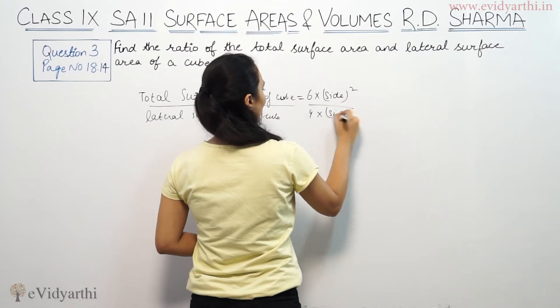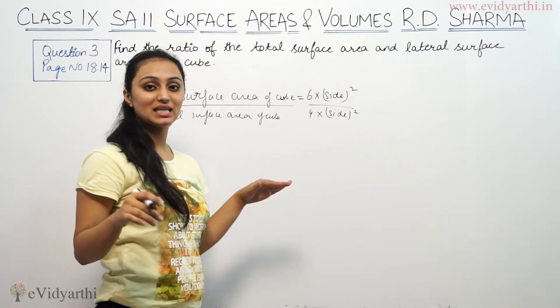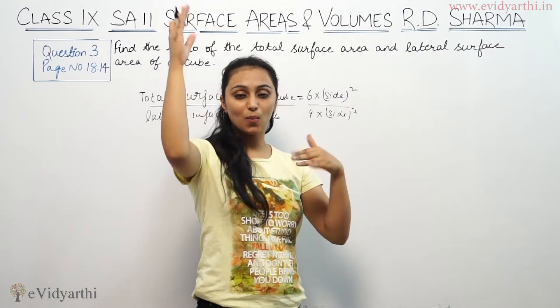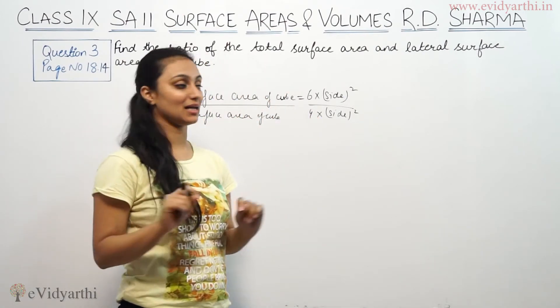Because all sides are equal, and in total surface area we count all 6 faces, while in lateral surface area we exclude top and bottom.